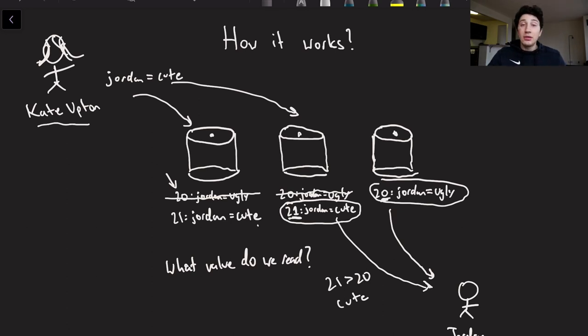And another actually cool thing that you can do in this leaderless replication is me being Jordan can see that this database over here, database number three, has an outdated value for Jordan. And so he's actually going to write back saying hey, for version number 21, we know that Jordan is actually equal to cute. So then this guy over here is going to basically update its value and say oh you know what, I just got a new update, it turns out Jordan is actually cute.